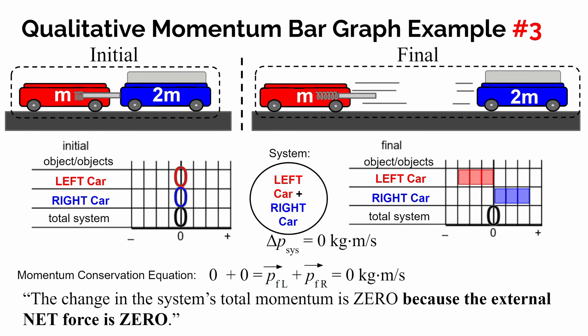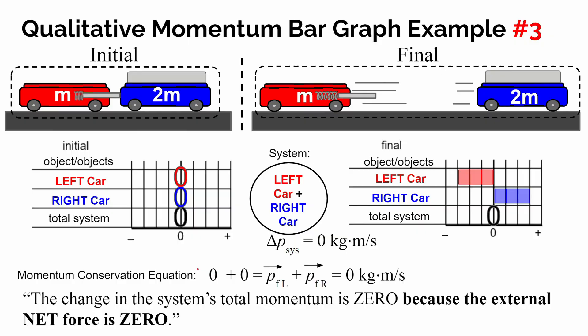This is a basic introduction to how we can use qualitative momentum bar graphs to think about what's going on with the momentum of an individual object or a system of objects. Just like with energy and energy conservation equations, we're going to use our momentum conservation equation to eventually solve quantitative momentum problems — whether it's an explosion event with two things pushing off of one another, or more likely a collision event where two objects collide with one another.